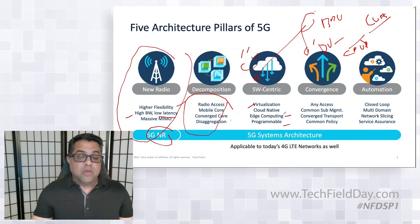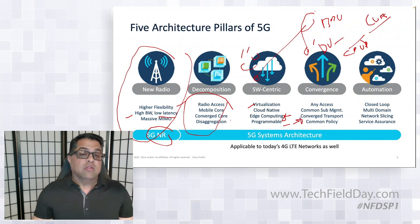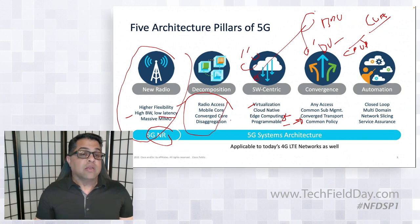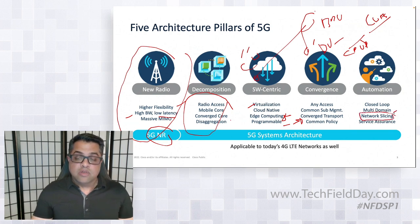Programmability is extremely important. Edge computing is being talked about a lot — how different workloads can be placed in different parts of the network. Then there is converged transport, which is the foundation that connects all those components together. It has to be extremely reliable and it has to be both wireline and wireless. And lastly, to bring it all together, you need closed loop automation, multi-domain. Another big terminology is network slicing — you are dividing your network into logical networks to deliver specific services.